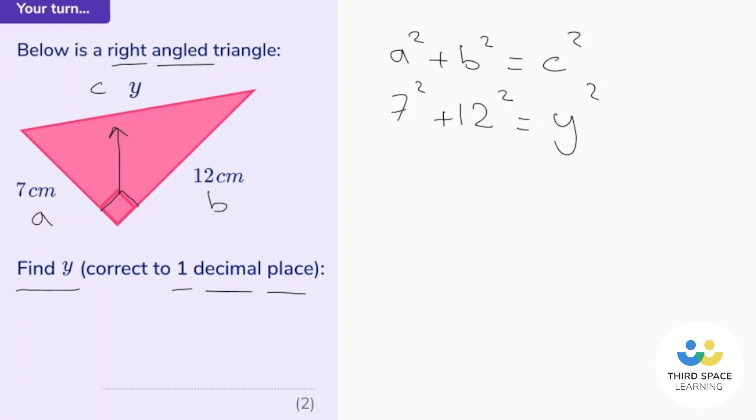Now, because this says correct to one decimal place, the answer is probably going to be a decimal. So at this point, just put this straight into your calculator. So 7 squared plus 12 squared is equal to 193. And that equals y squared.